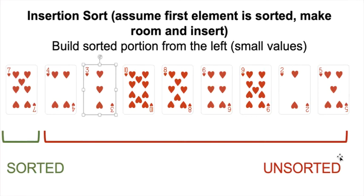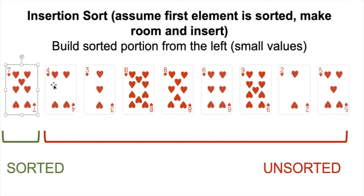Alright, let's trace through insertion sort. We assume the first element is sorted — so our first element seven is sorted by definition, since a single card is always sorted. Now we're going to start with the first element of our unsorted portion and insert it in its proper position in the sorted portion to grow the sorted portion by one.